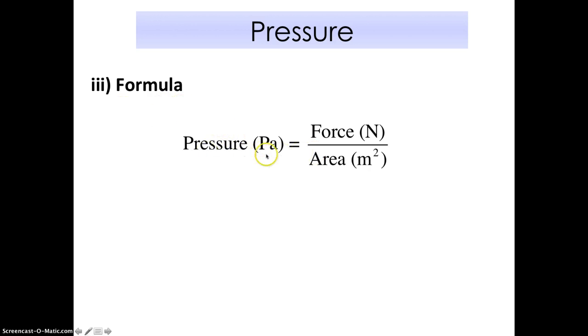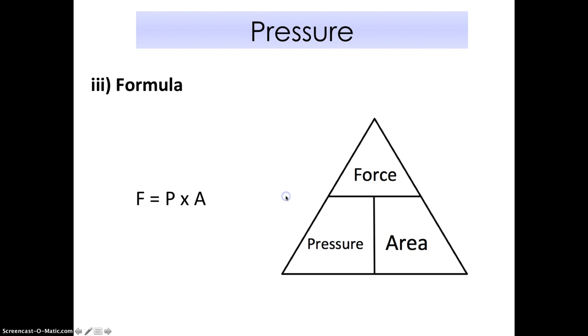Now the third part, the formula for pressure. Pressure equals force divided by area. The unit for pressure is Pascal, the unit for force is Newton, SI unit for area is meter squared. Note this is meter, not cm. Whenever you have cm you need to change to meters. Another way to write this is force equals pressure times area. You can form it in this triangle: force, pressure, area. For example, if you want to find force, you take pressure times area.